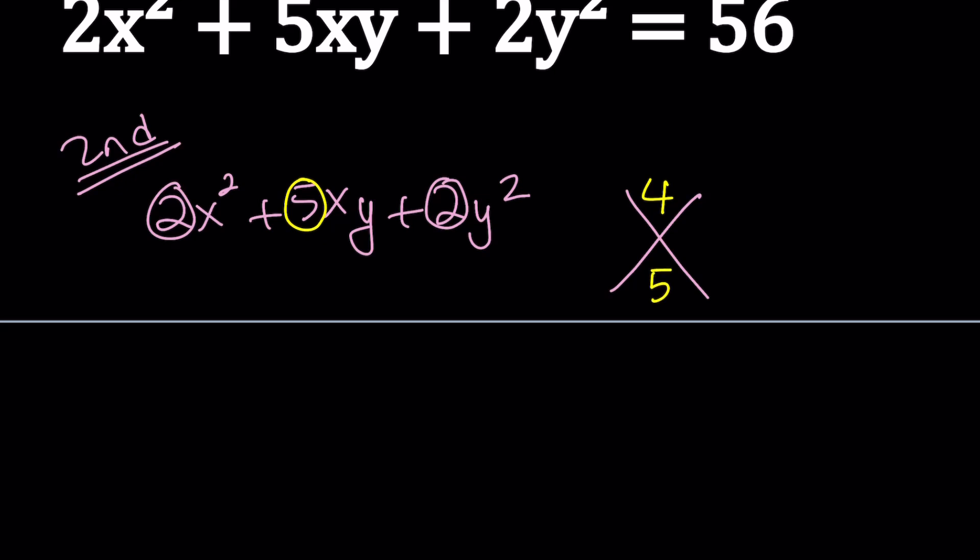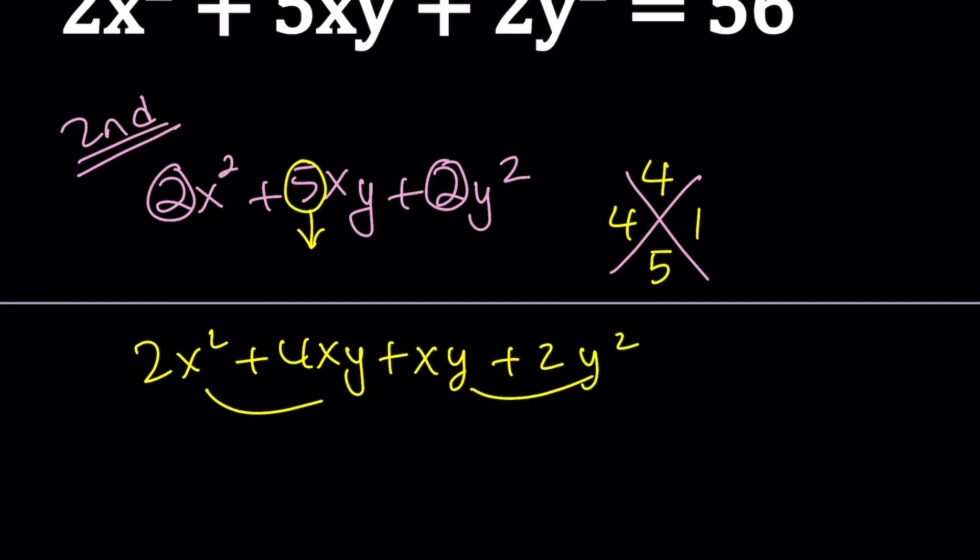You need to find two numbers whose product is 4 and whose sum is 5. Those numbers are 4 and 1, or 1 and 4. So we're going to write this as 2x² + 4xy + xy + 2y². Now we're going to factor by grouping.